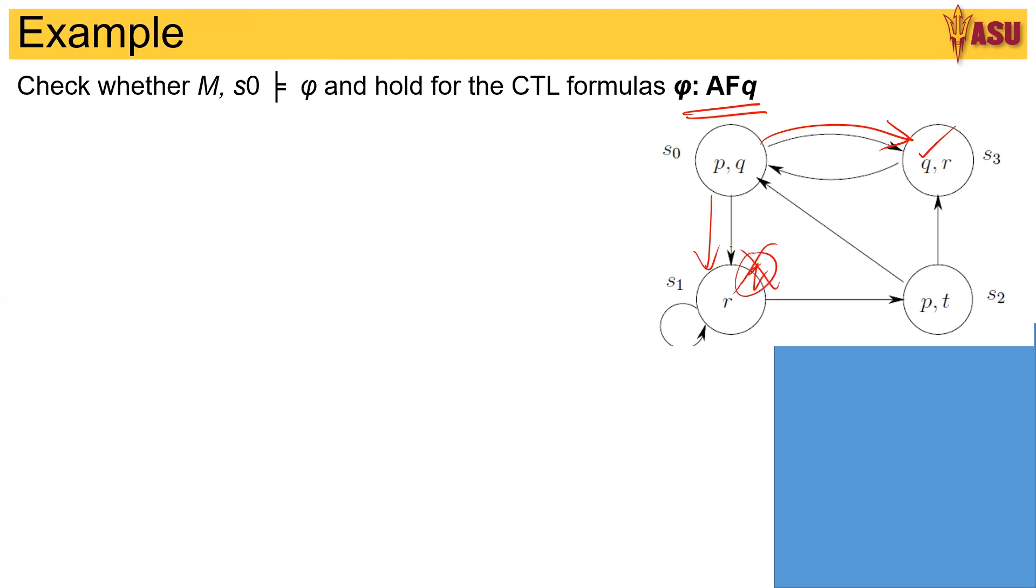Since q is not there, we need to step one or view ahead. So s1 goes to s2, and here there is again no q. S1 also goes to itself which again does not have a q. And so this does not follow.